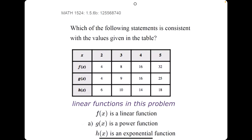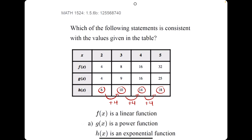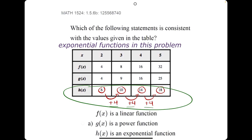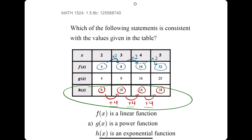A cool idea about linear functions is that they increase or decrease at the same rate the entire time. In a table, as you scan from left to right, ask yourself: are you adding or subtracting the same amount each time? 6 plus 4 is 10, 10 plus 4 is 14, 14 plus 4 is 18 — so h of x is our linear function. Similarly, if you're multiplying by the same amount each time, that's your exponential function: 4 times 2 is 8, 8 times 2 is 16, 16 times 2 is 32 — so f of x is our exponential function.